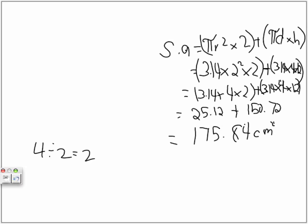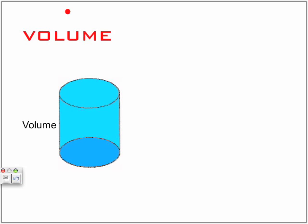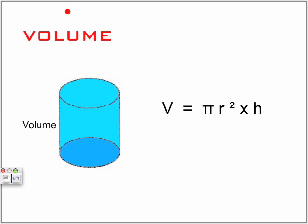Then let's go to the last part, which is the volume. To calculate the volume of a cylinder, the formula is pi times radius squared times height.